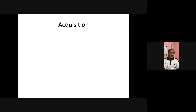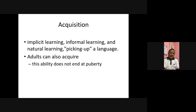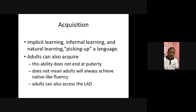Acquisition is implicit learning — it's informal and natural learning. It's like picking up a language when you stay for a long time in a particular place. Unless you are not motivated and don't want to learn the language. Now, adults can also acquire. This ability does not end at puberty, but it does not mean that adults will always achieve native-like fluency. According to Krashen, adults can also access the language acquisition device inside universal grammar — it's a separate faculty for learning a language.